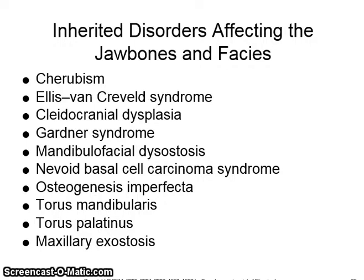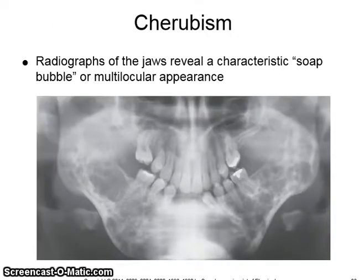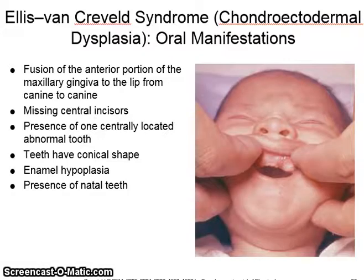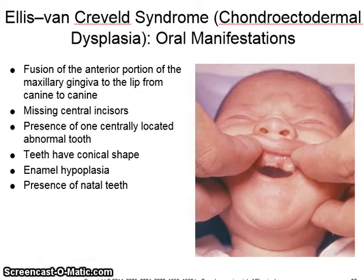Inherited disorders affecting the jawbones and faces. Cherubism: the radiograph of the jaws reveals a characteristic soap bubble or multilocular appearance. Ellis van Creveld syndrome results in fusion of the anterior portion of the maxillary gingiva to the lip extending from canine to canine.